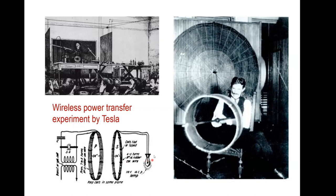Tesla wirelessly transmitted energy to power an incandescent lamp. Interestingly, in his first patent he used magnetic resonance. This point is important because in the year 2007, the physics department of MIT published a paper in Science using a similar idea, but they claimed it was a new idea. For those of us who understand Tesla's original work, Tesla's first patent on wireless power was already based on magnetic resonance.